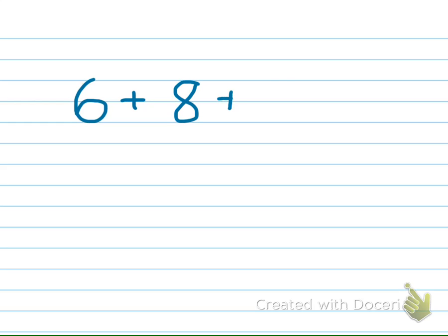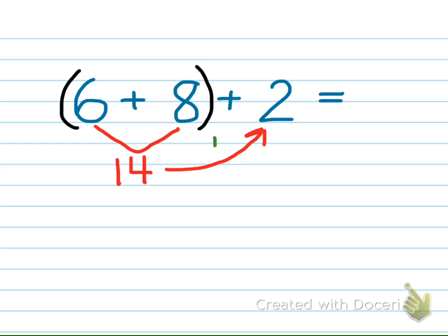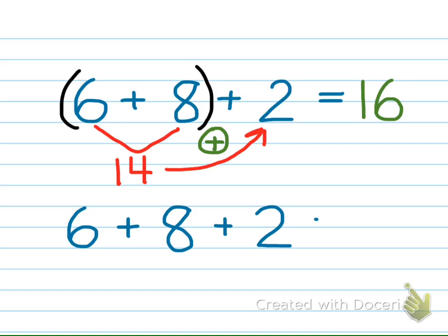So you can see, the associative property illustrates that when three or more numbers are added, the sum is the same regardless of the order that the addends were added together. Look at the two number sentences. Even though they were solved by adding the numbers in a different order, they both equaled the same sum.